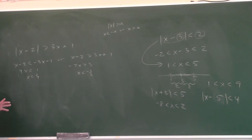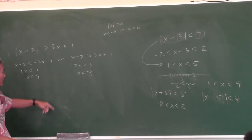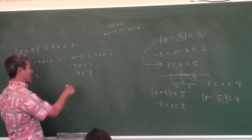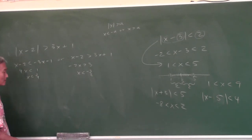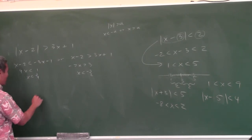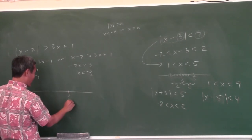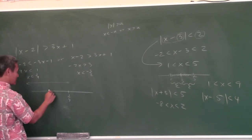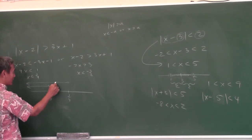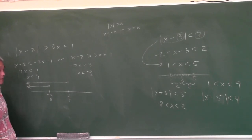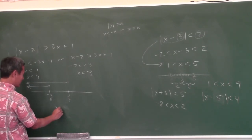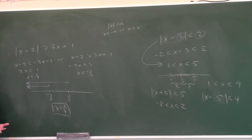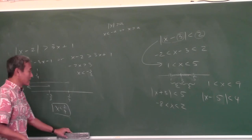You have to know the difference between OR and AND. OR means union, AND means intersection. We have OR here, so it means union. Numbers less than 1/4 in one set, numbers less than negative 3/2 in another. Draw a number line: here is 1/4, here is negative 3/2. The union of everything less than 1/4 and everything less than negative 3/2 gives you x less than 1/4. That's your answer.